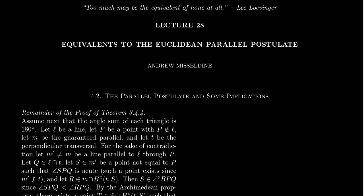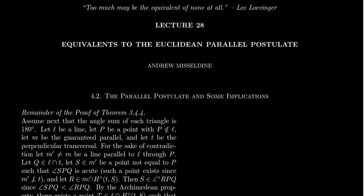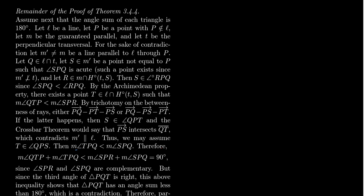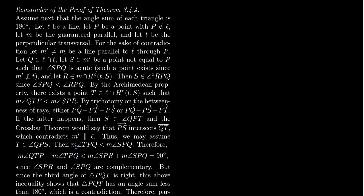We have to finish a lecture that we started previously in Lecture 27. Theorem 3.4.4 stated that the Euclidean Parallel Postulate is equivalent in neutral geometry to the angle sum of a triangle always equaling 180 degrees. What we proved last time is that if we assume the Euclidean Parallel Postulate, then every triangle's angle sum will equal 180 degrees. What we want to prove today is the converse: we assume the angle sum of triangles is always 180 degrees, and then prove the Euclidean Parallel Postulate.